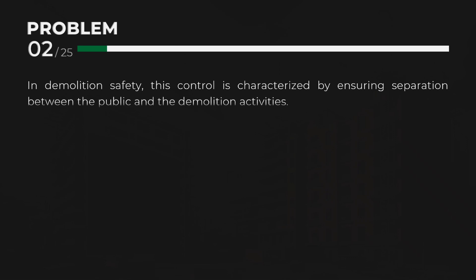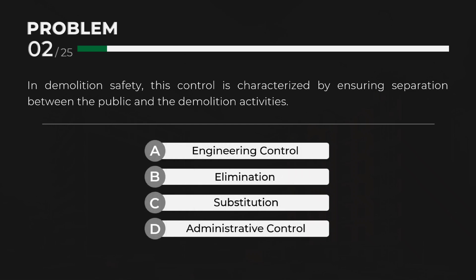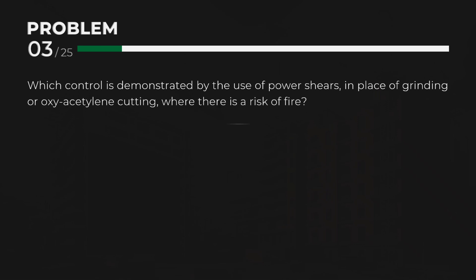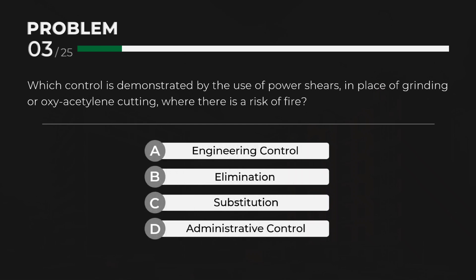In demolition safety, this control is characterized by ensuring separation between the public and the demolition activities. Answer: B. Elimination. Which control is demonstrated by the use of power shears in place of grinding or oxyacetylene cutting where there is a risk of fire? Answer: C. Substitution.